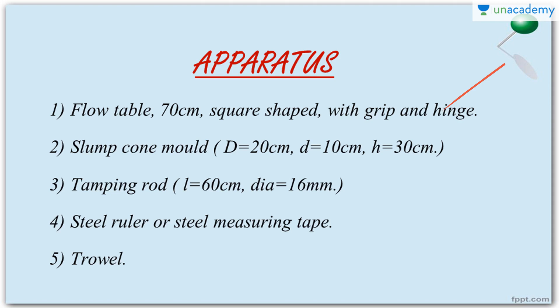Next is the slump cone mold, which is used in most laboratories. It has a lower diameter of 20 cm, an upper diameter of 10 cm, and a height of 30 cm. Sometimes another apparatus, the Abrams cone, is used instead — the only difference is a lower diameter of 25 cm, upper diameter of 17 cm, and the same height of 30 cm.